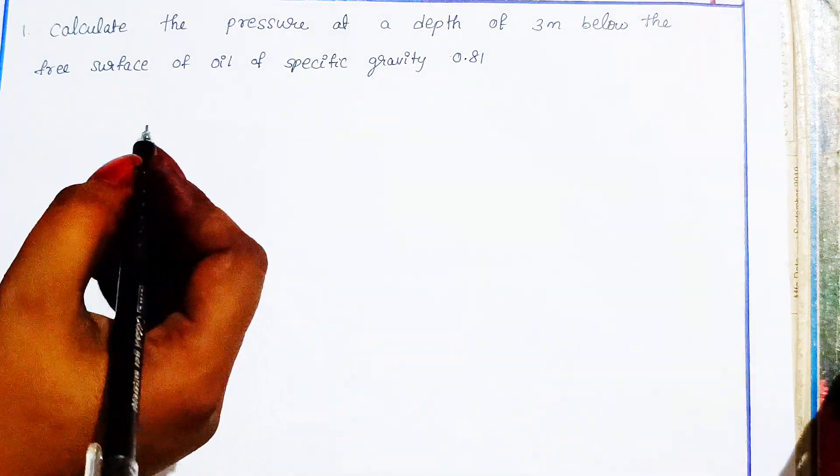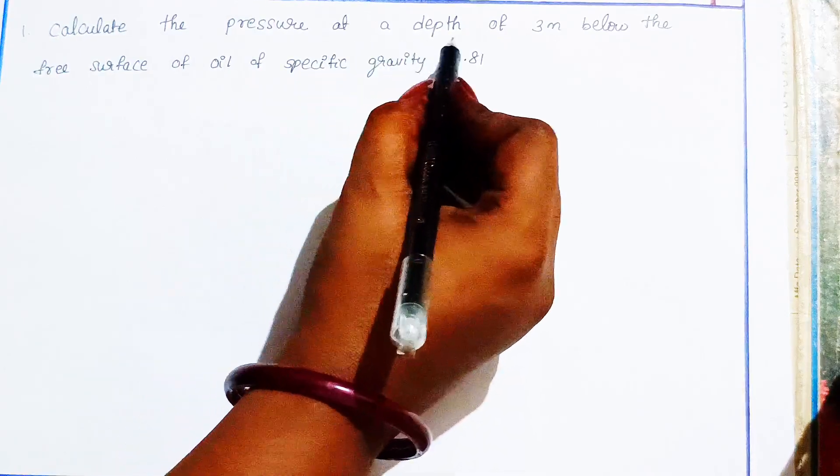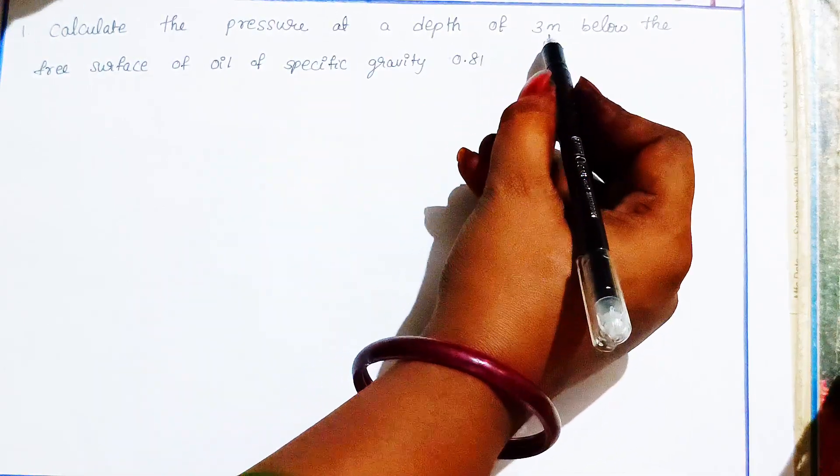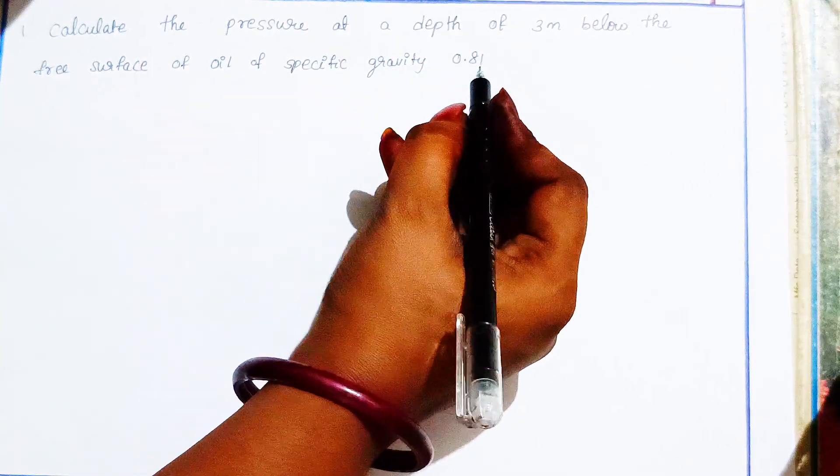Now I'm going to calculate the pressure at a depth of 3 meters below the free surface of oil with specific gravity 0.81.